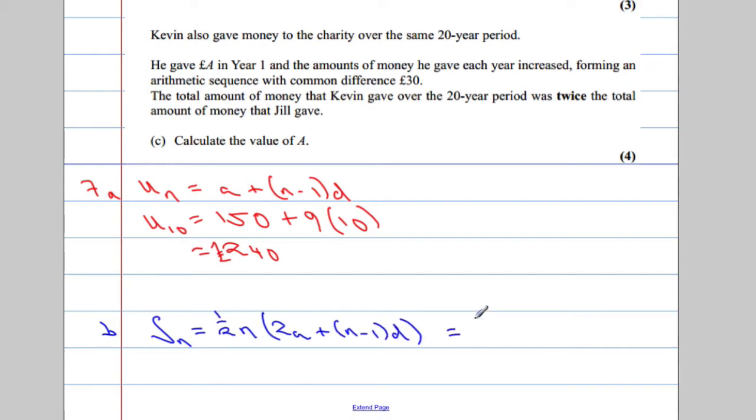And that's also equal to 1 half N times A plus L, where A is the first term and L is the last term. Now, just looking at what the information that I've got, I'm going to opt for the first formula.